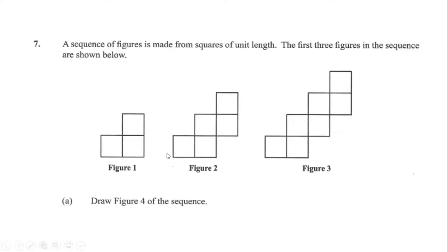What we realize is that figure 1 had 3 squares and figure 2 had 5, so an additional two squares were added at the end. Figure 3 has 7, where an additional two squares are added at the end. So each upcoming figure has two squares added.